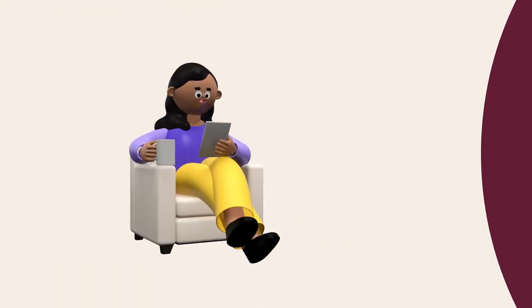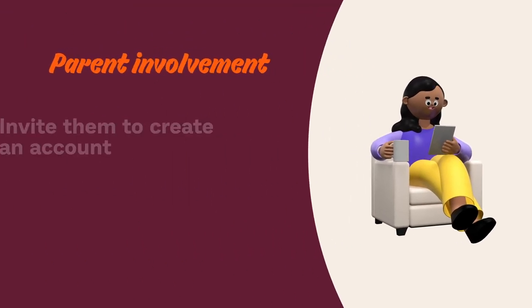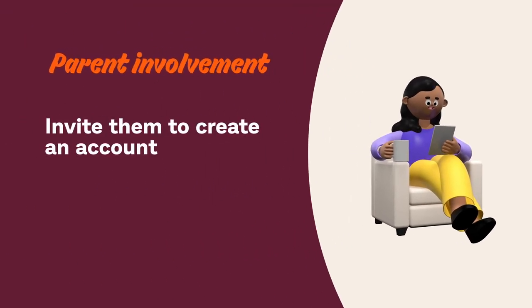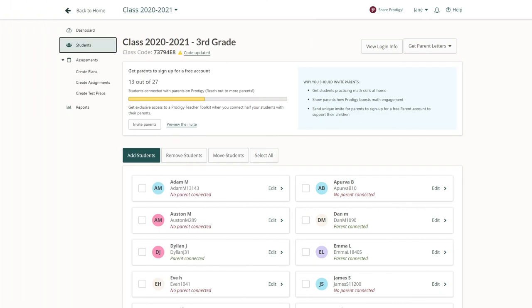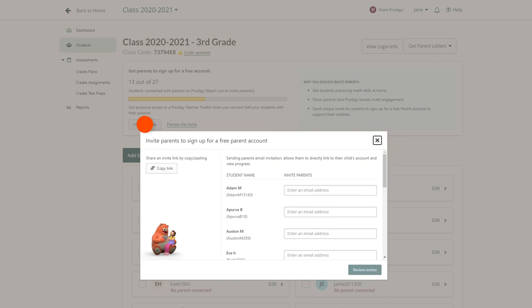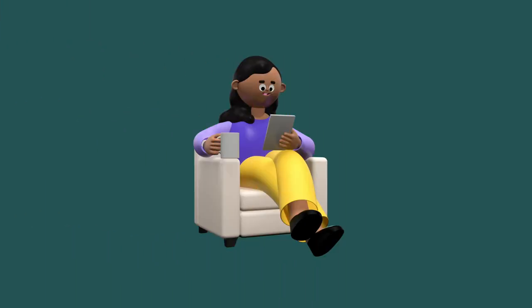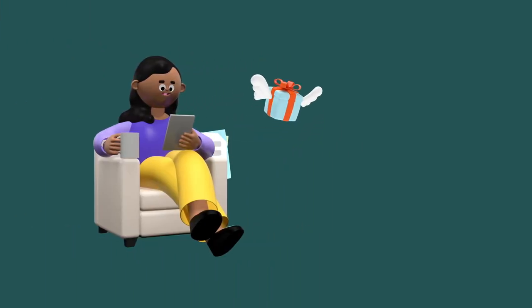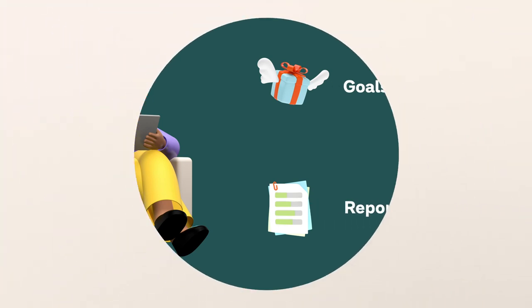The third is getting your students' parents involved by inviting them to create a parent account and connect it with their child. You can create these invites from your dashboard, then send them to parents via email or another secure connection. Once created and connected, parents will be able to use features like goals and rewards to keep their child engaged, as well as monthly report cards to track their progress.